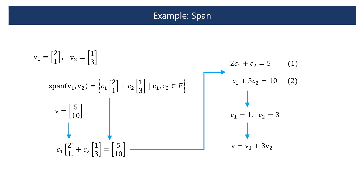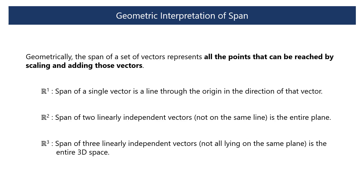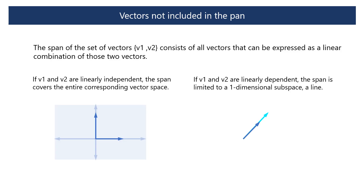And they span the space. Geometrically, the span of a set of vectors represents all the points that can be reached by scaling and adding those vectors. In one-dimensional space, the span of a single vector is a line through the origin in the direction of that vector. In two-dimensional space, the span of two linearly independent vectors is the entire plane. In three-dimensional space, the span of three linearly independent vectors is the entire 3D space. If V1 and V2 are linearly independent, the span covers the entire corresponding vector space.